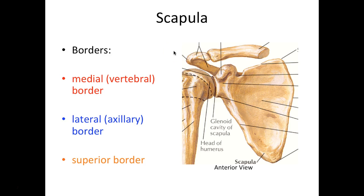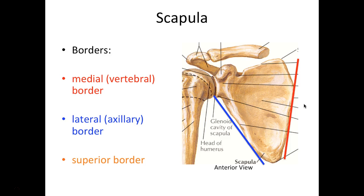Moving into the scapula — our scapula is really in the shape of a triangle, with three sides and three corners or angles. Our first border is the medial or vertebral border; we call it the vertebral border because lying right here between your shoulder blades you would see the vertebrae. The other border is the lateral or axillary border, heading toward the armpit. And lastly we have the superior border, which is the superiormost border.